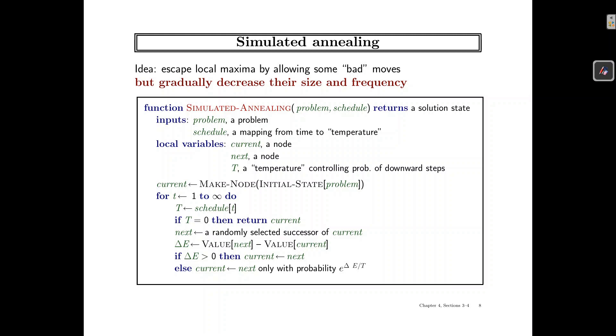The hill climbing algorithm has a problem. It never makes a downhill move. So it always tries to go for a better state whether it's downhill or uphill. It will always go to the lower value or higher cost. So in that case, it can get stuck on local maximum.